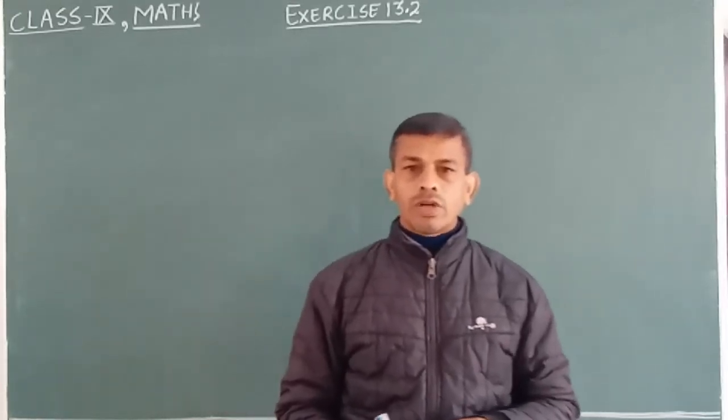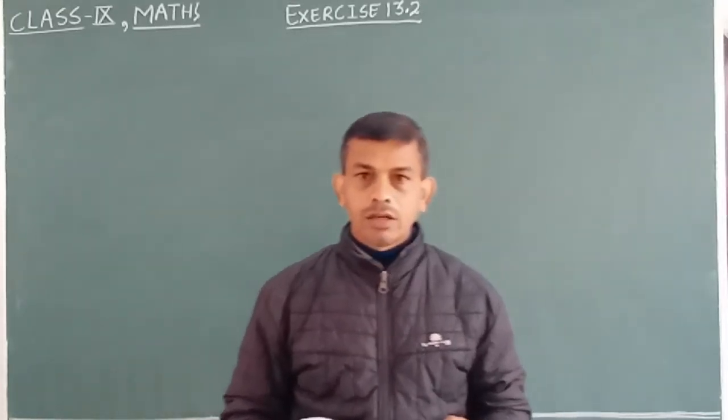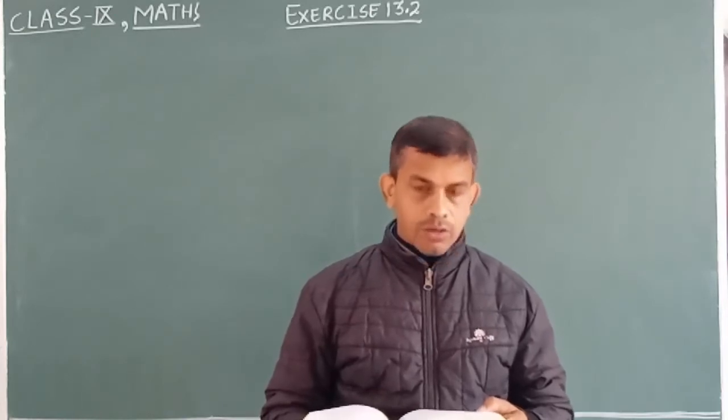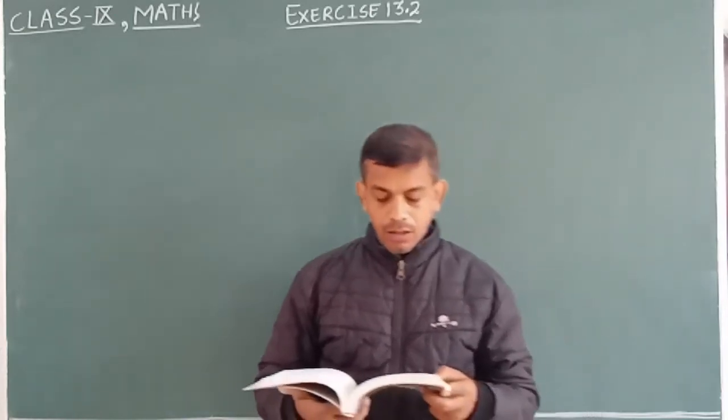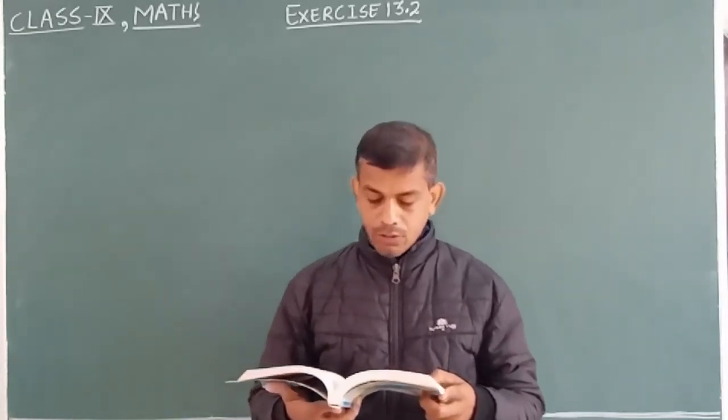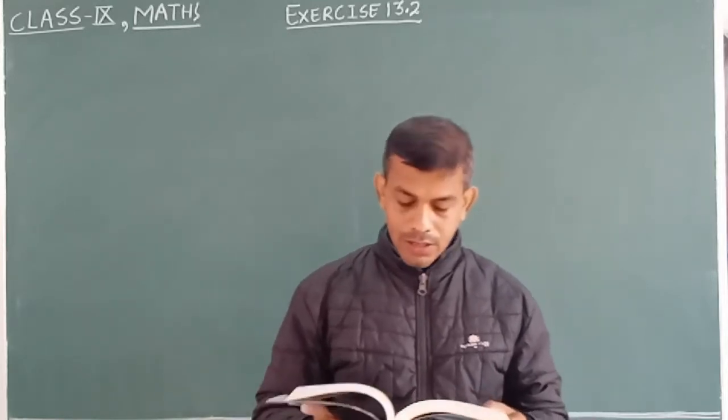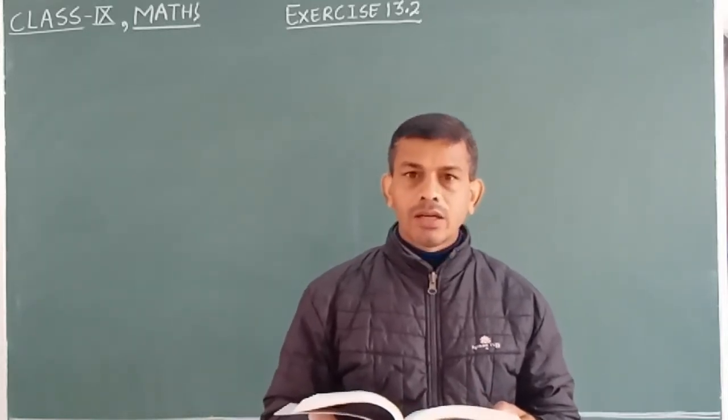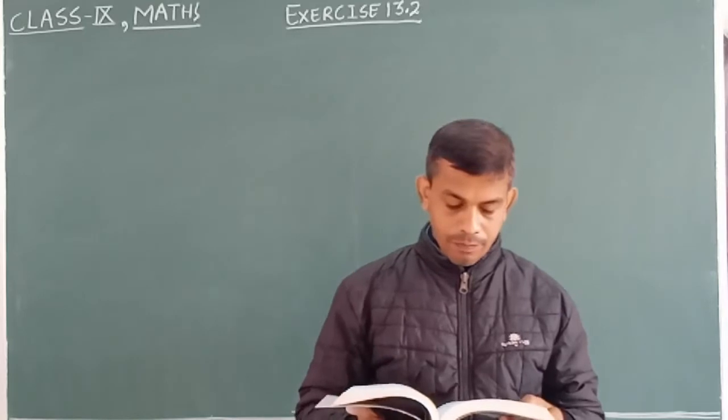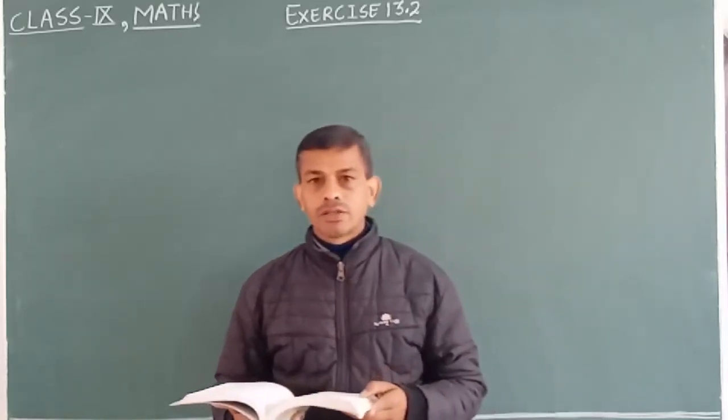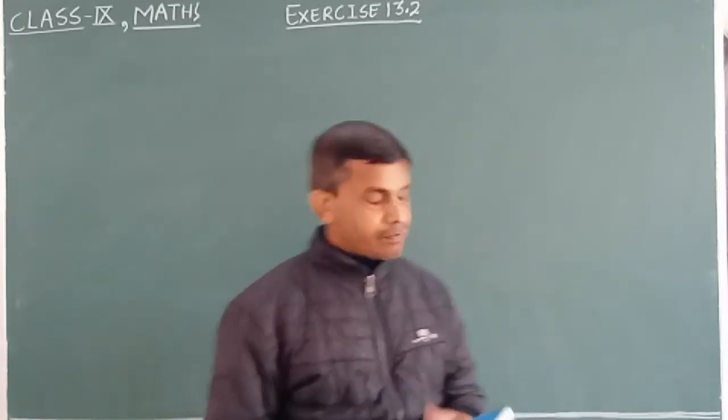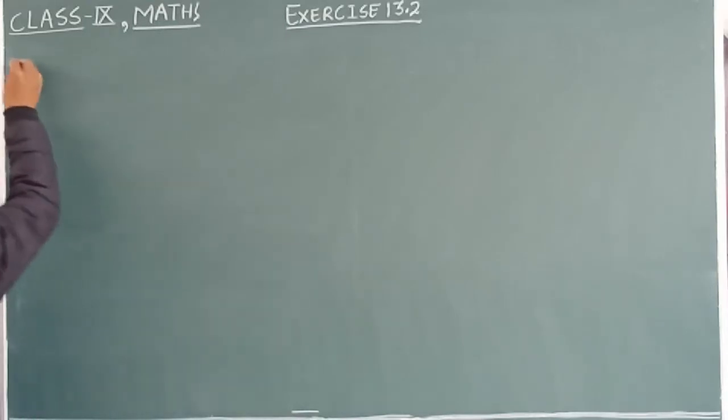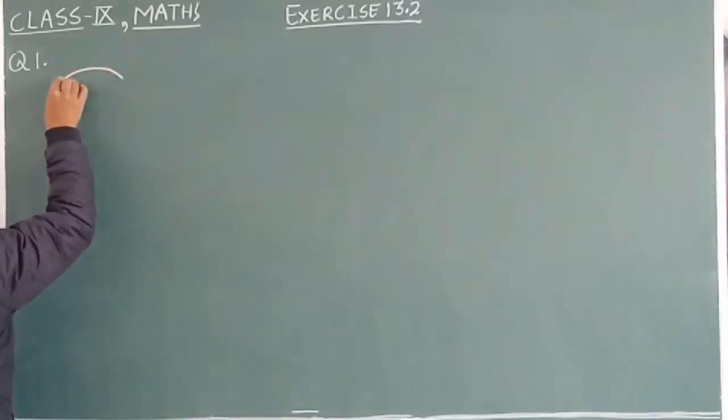Hello everyone, today we will start Exercise 13.2. Question number one is: The curved surface area of a right circular cylinder of height 14 centimeter is 88 square centimeter. Find the diameter of the base of the cylinder. So let's figure out the different conditions for a right circular cylinder.